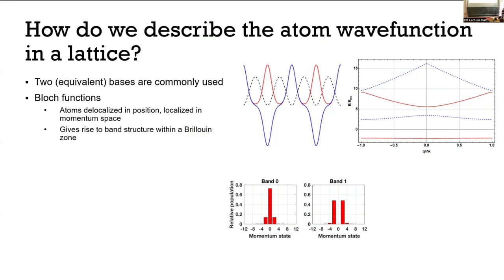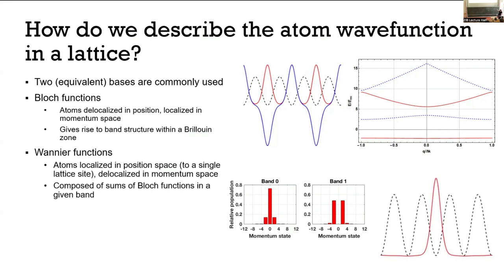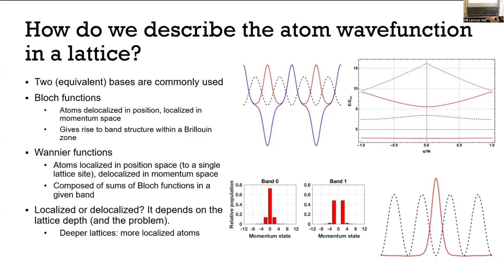Understanding this quantization is very important to understanding the first half of what I'm going to talk about. There is also the Wannier function, which is localized in position space to a single lattice site. You get it by summing all the different quasi-momenta within a given band and applying the appropriate phases, giving something known as a maximally localized Wannier function — basically the thing that sits as much as possible on a single lattice site. Localized or delocalized depends on the lattice depth and the problem. Deeper lattices mean more localized atoms. That cold atom in a deep lattice gives rise to something like a Bose-Hubbard Hamiltonian.